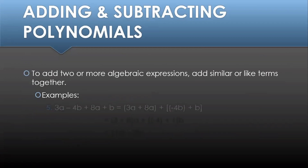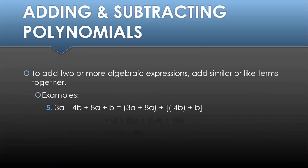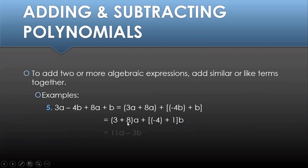For the fifth example, we have 3a minus 4b plus 8a plus b. We can combine 3a and 8a, and negative 4b and b. So we group them: 3 plus 8 gives us 11a, and negative 4 plus 1 gives us negative 3b. So the final answer is 11a minus 3b.